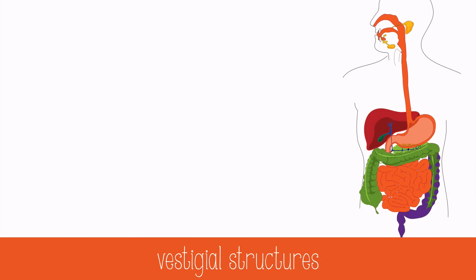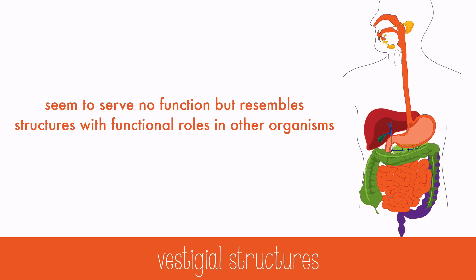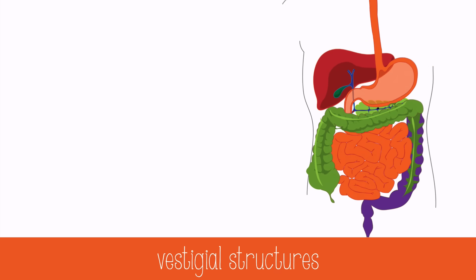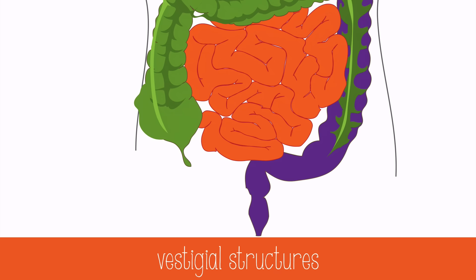Vestigial structures are another piece of evidence because the structures seem to serve no function, but resemble structures with functional roles in other organisms. An example commonly used is the human appendix. The appendix was thought to be a shrunken remain of the cecum that can be found in many kinds of herbivores — a remnant of evolution yet to be truly removed. However, in 2013, scientists refuted the relationship between cecum size and appendix presence. The appendix is actually a housing complex for mutualistic bacteria that aid in digestion for many species, including humans.